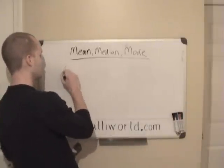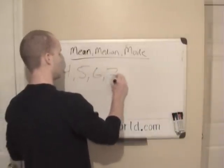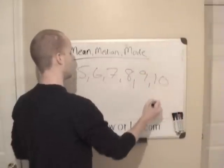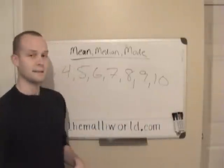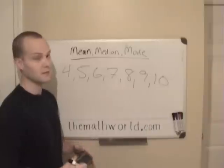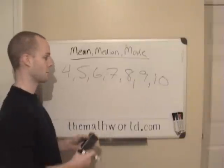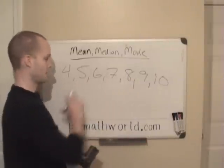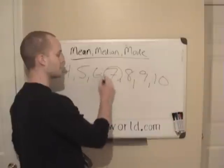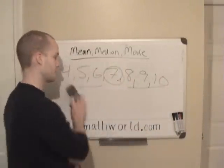So if you're given a set of numbers — 4, 5, 6, 7, 8, 9, 10 — and they say find the median, what they're looking for is the middle number. First thing you want to do is arrange the numbers in order. I've already arranged them here. The middle number in this example is 7. There are three numbers before it and three numbers after it.